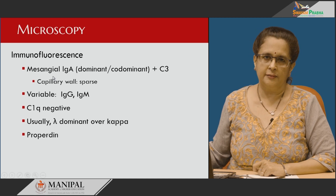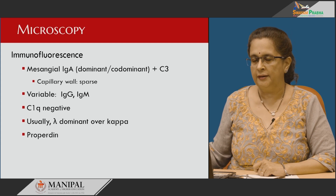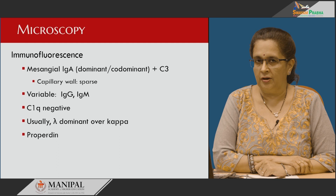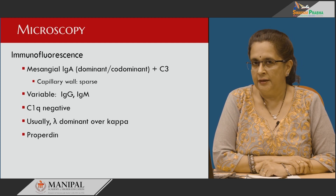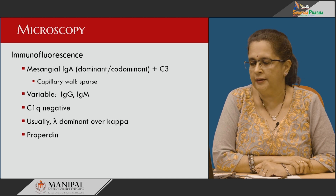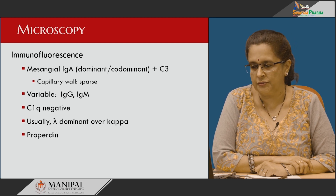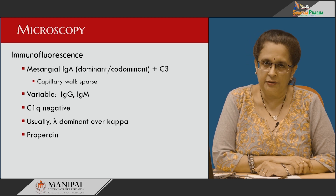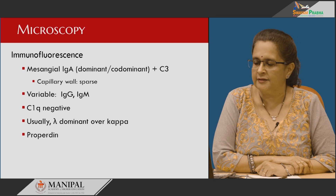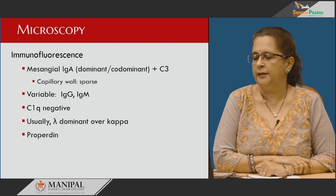On immunofluorescence, the predominant pattern is deposition of IgA most importantly in the mesangial region — this is the dominant pattern. IgA dominant along with C3; if IgA and C3 are present to a similar extent, it is known as codominant. It is mostly seen in the mesangium but rarely can affect the capillary walls. IgG may sometimes be seen, as can IgM, but C1q — the classical pathway — is negative. Amongst kappa and lambda, lambda is dominant, and rarely properdin can also be seen.